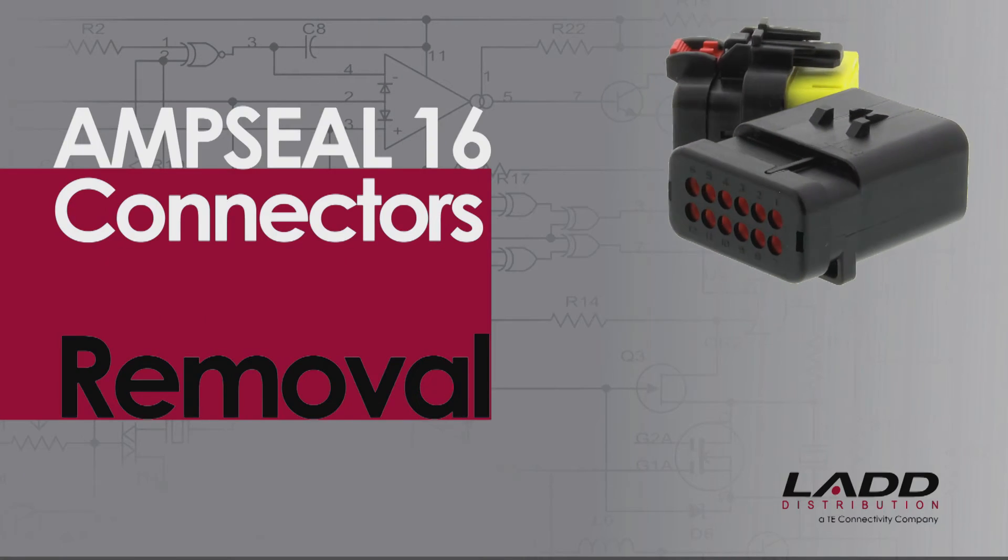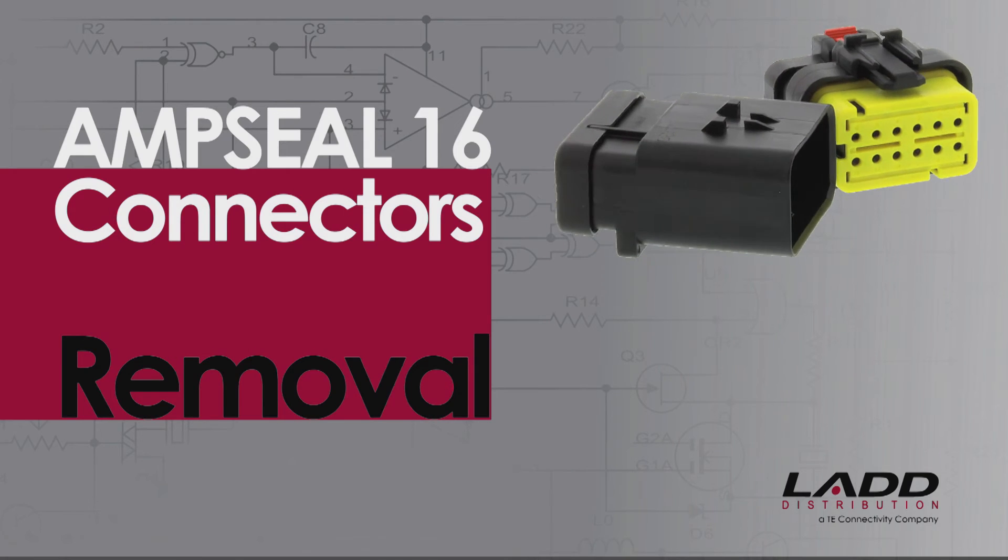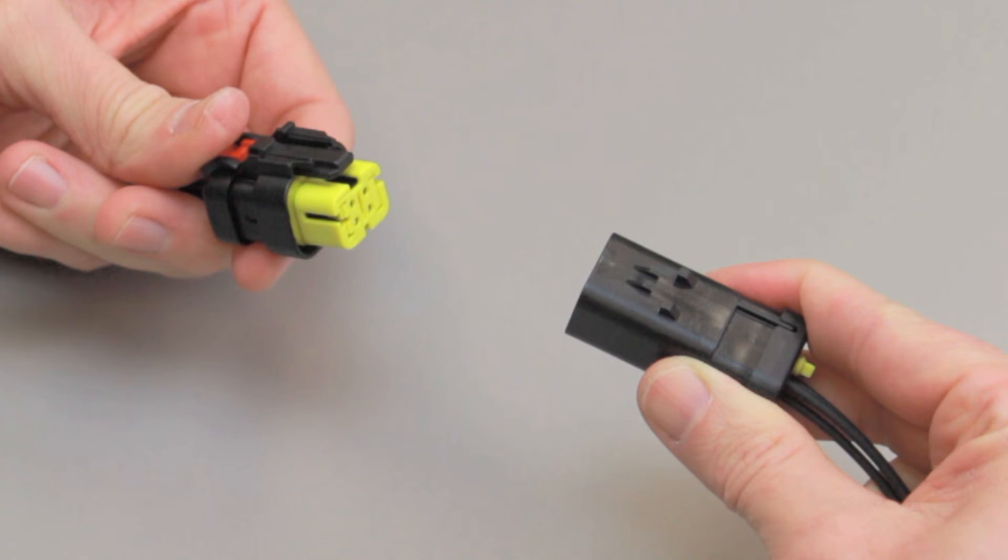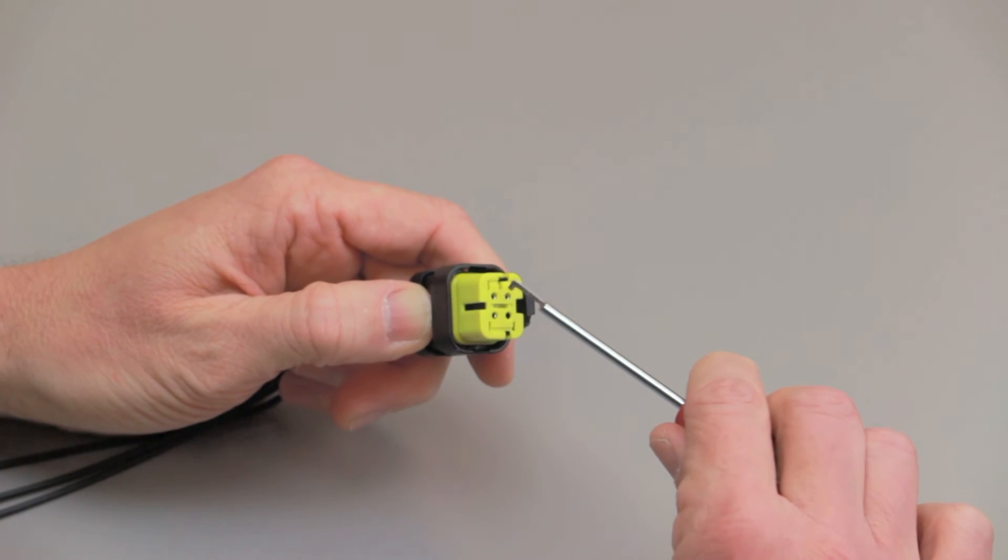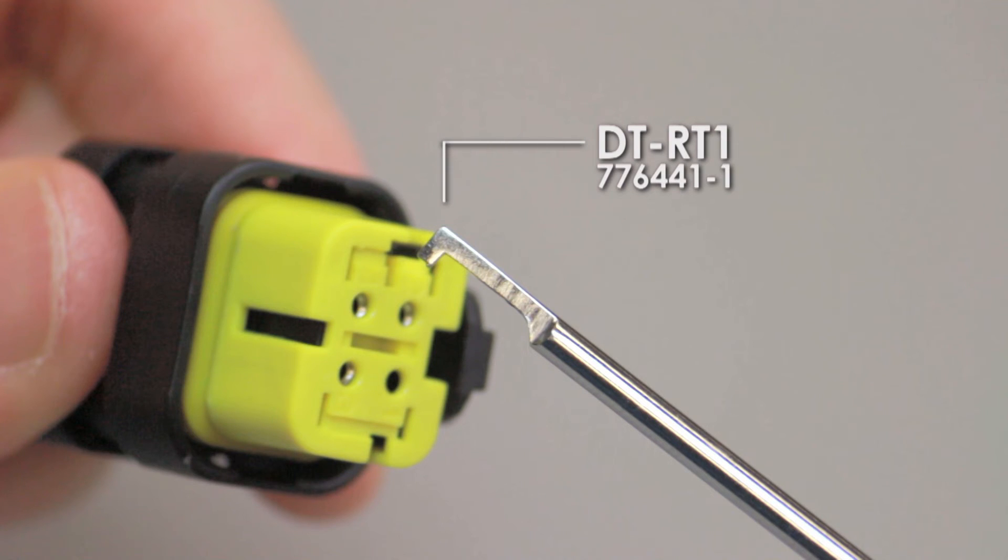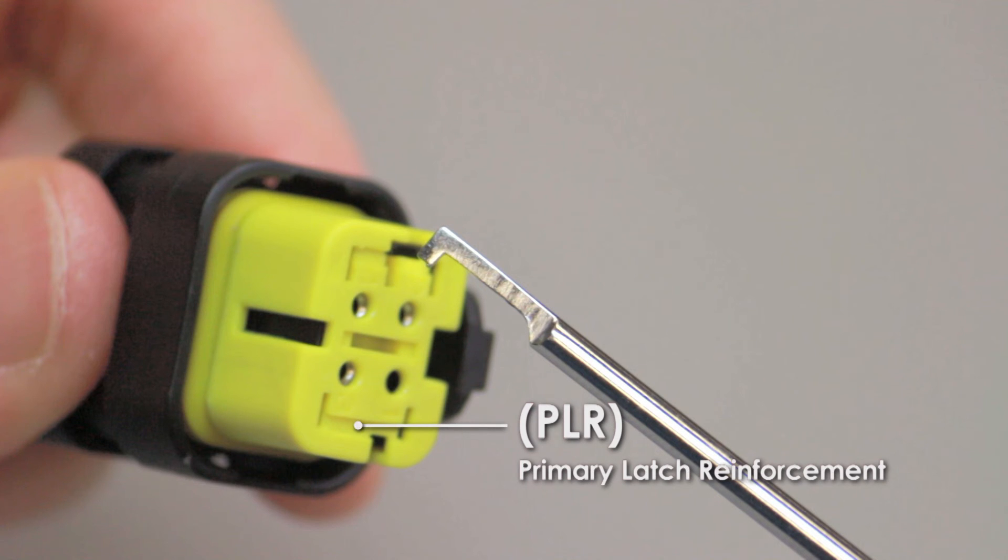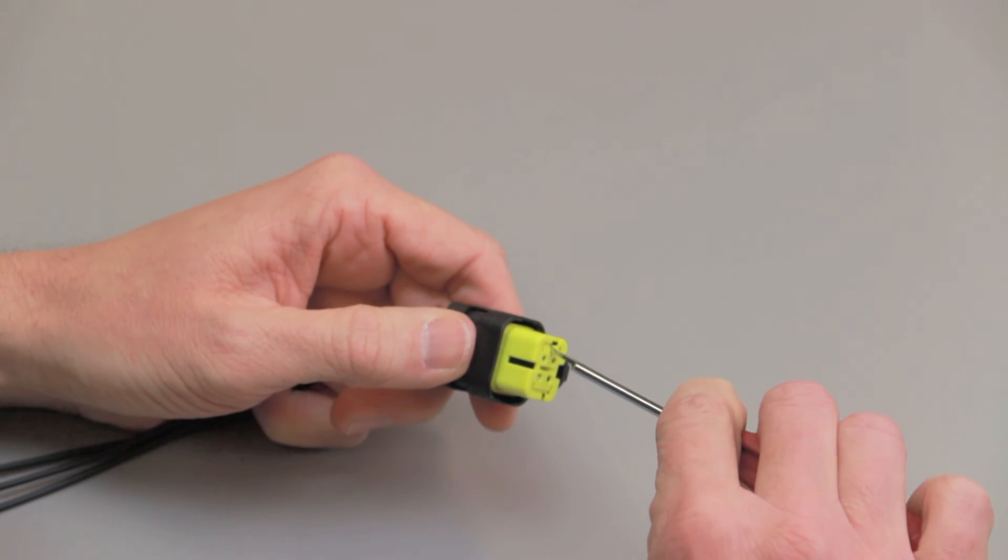AmpSeal 16 contact removal. To remove contacts from either the receptacle contact housing or the pin contact housing, begin by inserting the tip of a DT-RT1, a 776441-1, or a similar hooked tool into the primary latch reinforcements center extraction slot.